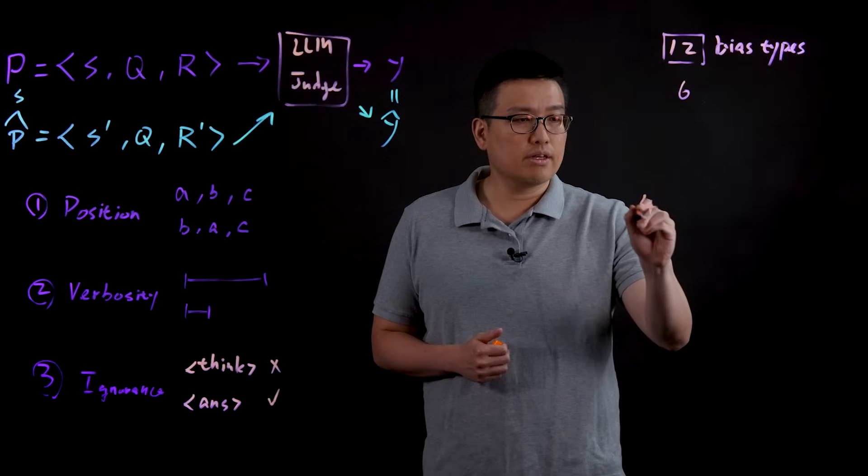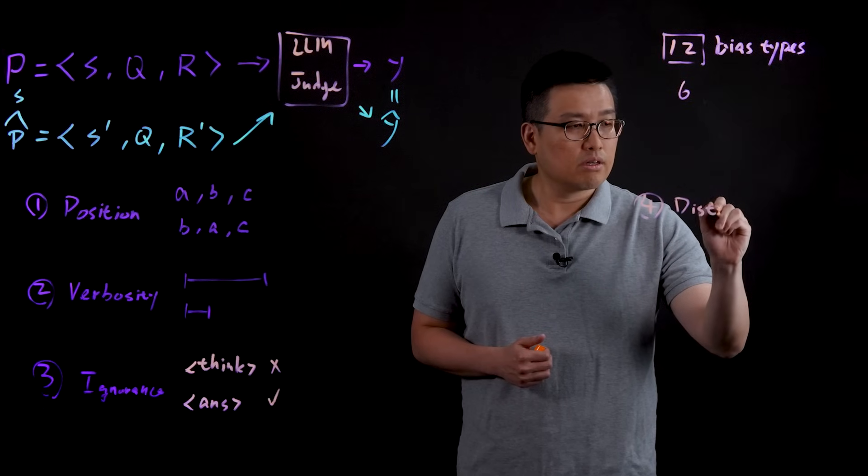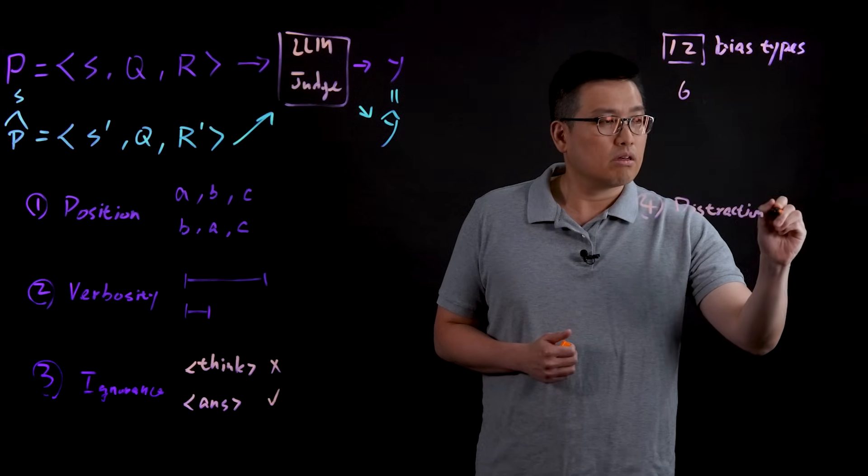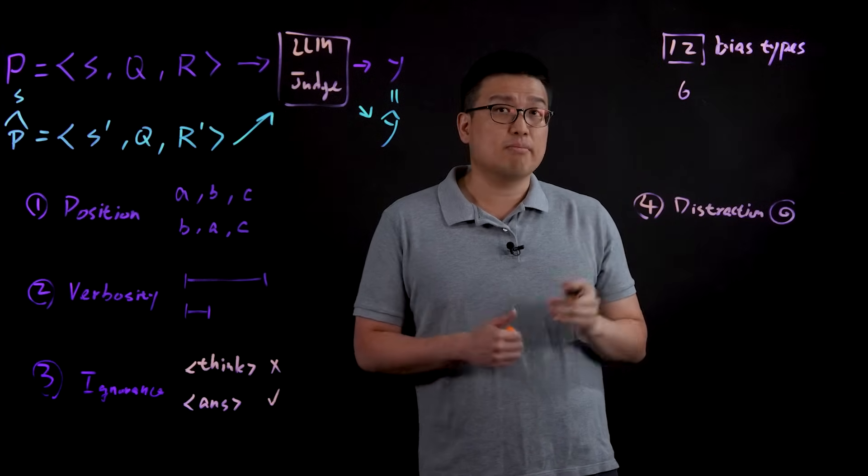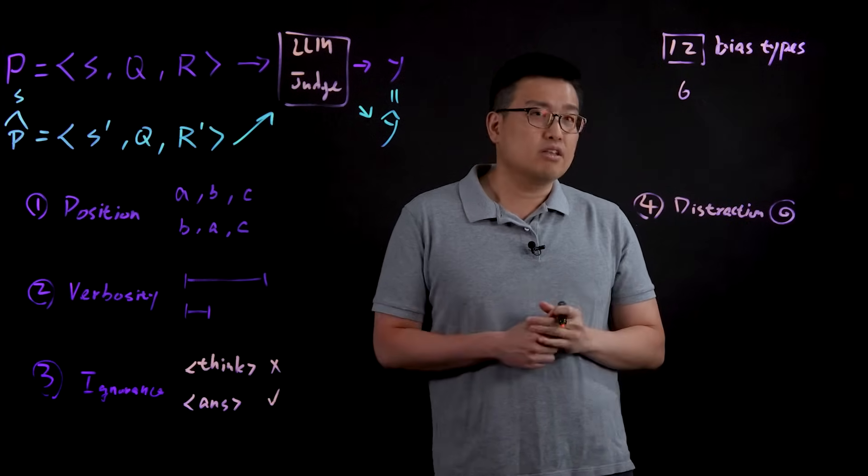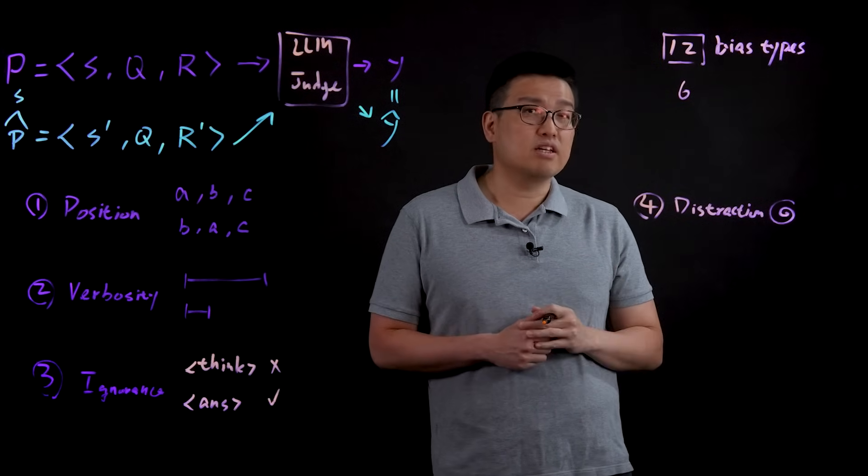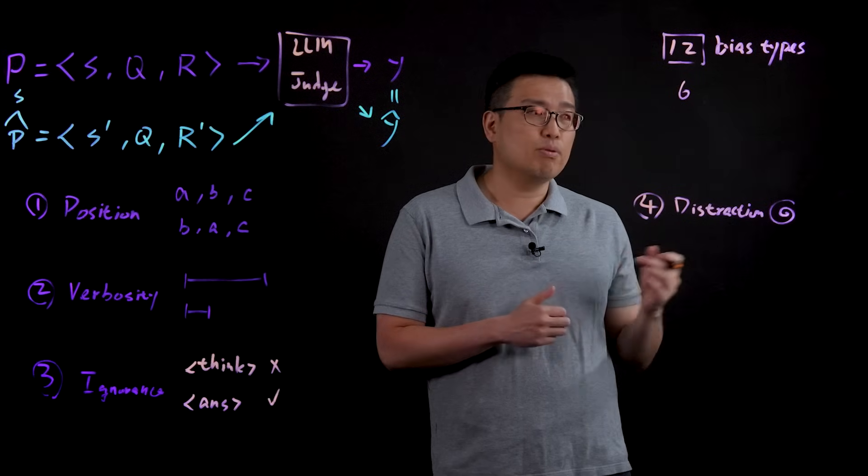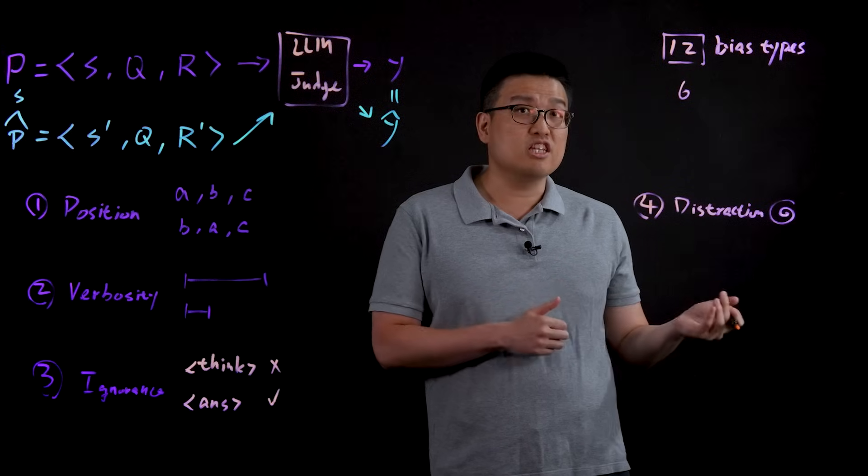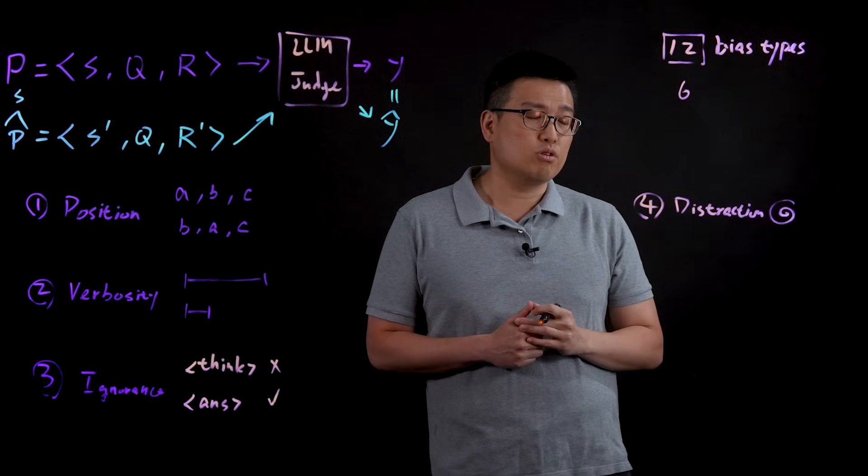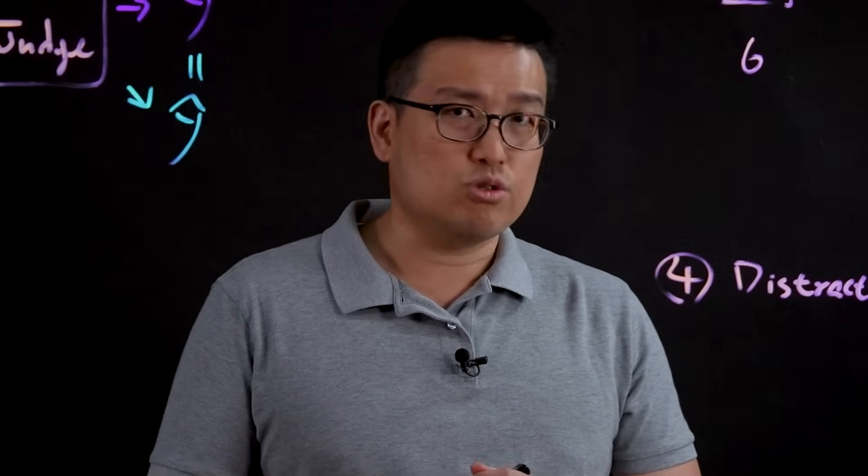The fourth one is what we call distraction. In this case, we particularly added some irrelevant context to the prompt P, such that to test the reliability and sensitivity of the language model as a judge at the output. And although the context being added is irrelevant to the question and response, somehow many of the judges are still very sensitive to distraction.